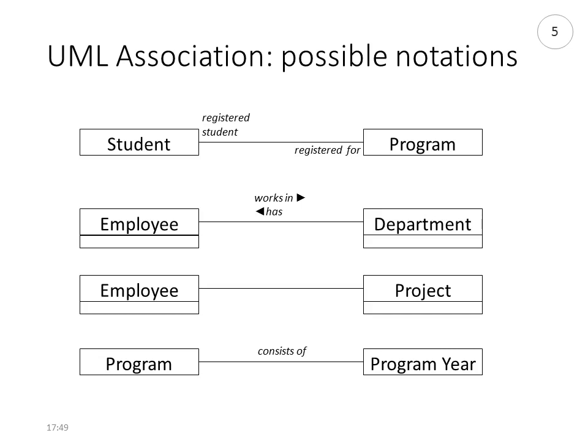The way we write down an association in UML can vary. It's always a line, and the line can be adorned with several extra pieces of information. We will name the different roles — these are the directions in which you can read the association. In the top example, student is registered for program is the role from student to program, and we put a name next to the program. In the other direction, a program has registered students. The other notation is to put the role names in the middle with little arrows — for example, employee works in department and department has employees — with arrows to indicate the direction.